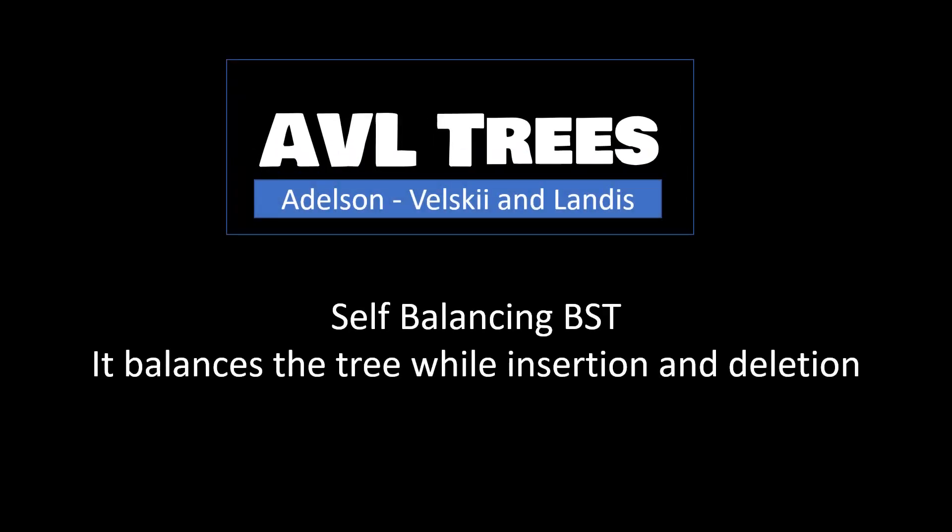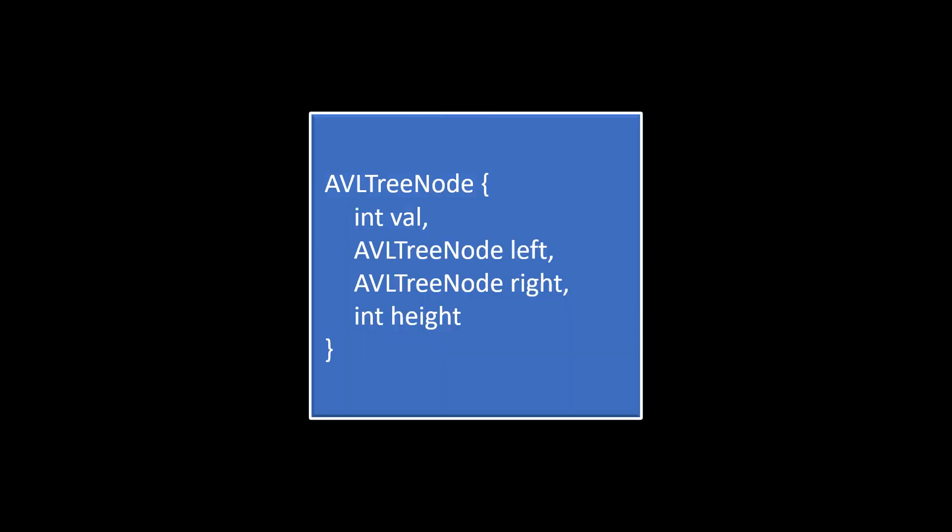AVL tree is balanced binary tree. In this, we perform rotations on node if the insertion or deletion of a node causes an imbalance in the binary tree. The structure of the AVL node has an additional value height that helps us in evaluating the balance factor.